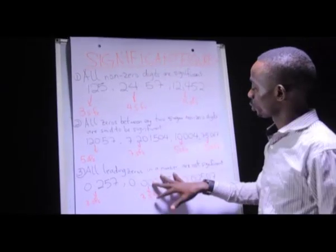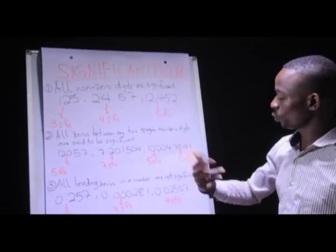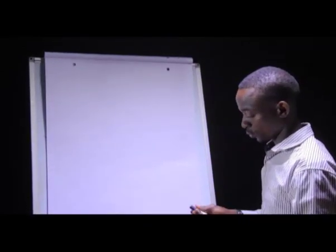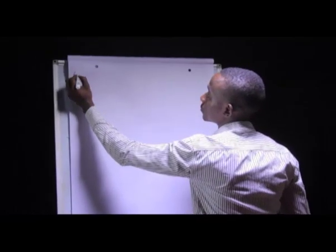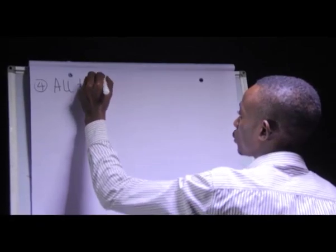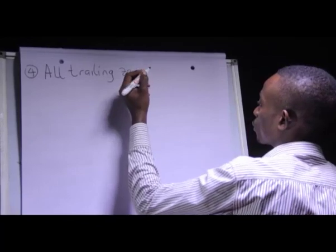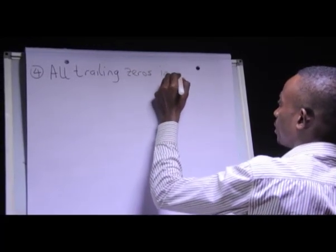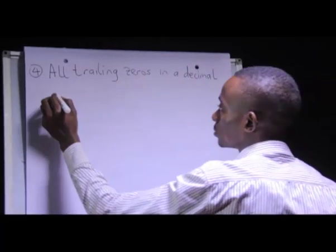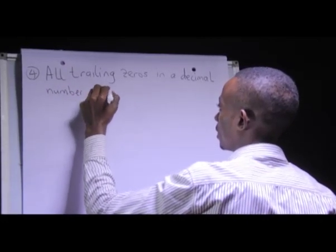The first three conditions for determining significant figures have already been covered. Now we look at two more conditions. Condition number four states that all trailing zeros in a decimal number are significant.